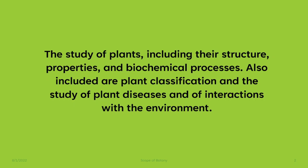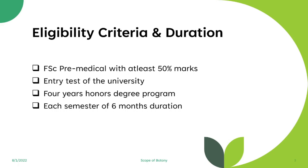If you are someone interested in plant sciences, then you should pursue a degree in Botany. Regarding eligibility criteria and duration, you will need to do BS Botany, which is a four-year honors program after FSC pre-medical. You need to attain at least 50% marks to be eligible for admission. In addition, an entry test is required — universities can conduct their own test or accept the test conducted by HEC. The four-year honors degree consists of eight semesters, each of six months duration.